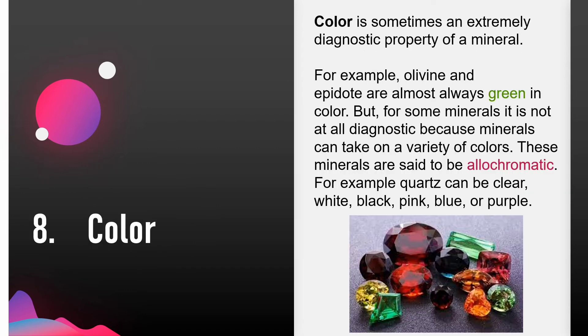For most of us, colour is one of the key ways of identifying objects. While some minerals have particularly distinctive colours that make good diagnostic properties, many do not, and for many, colour is simply unreliable. They can take on a variety of colours — such minerals are said to be allochromatic. For example, olivine and epidote are almost always green in colour, while quartz can be clear, white, black, pink, blue or purple.